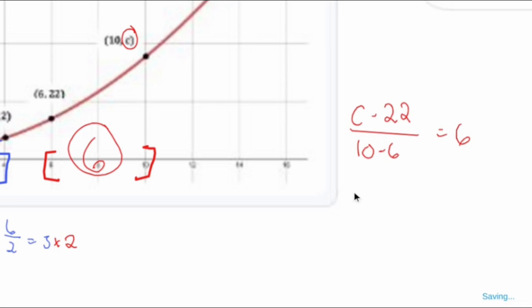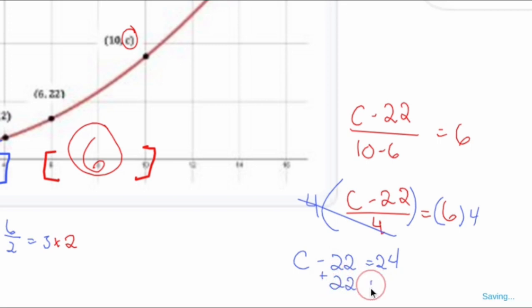Okay, C minus 22, no clue, but it's going to be over 4 and equal 6. Multiply both sides by 4. Good old algebra 1. C minus 22, the Taylor Swift special, equals 24. Let's add 22. 22 plus 24—let me write it big so when I zoom out I can see it—is 46. C equals 46.